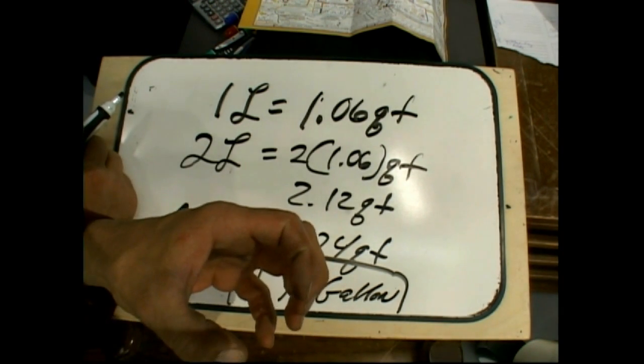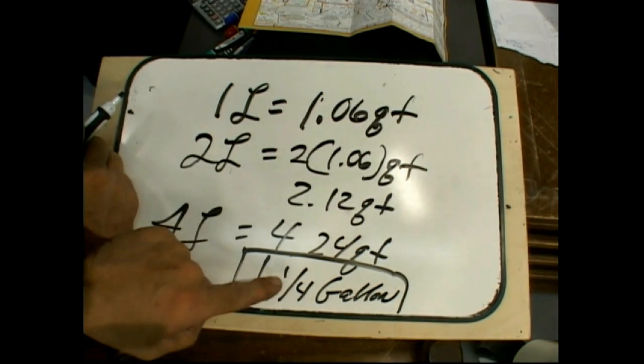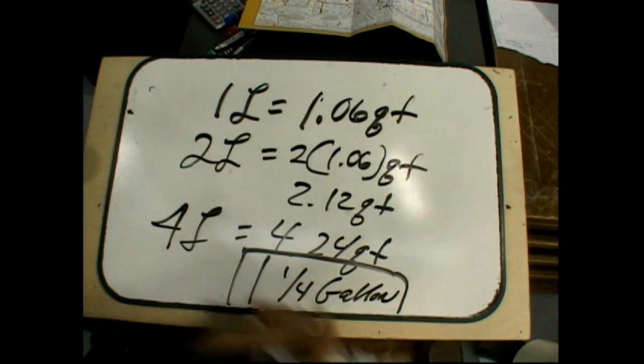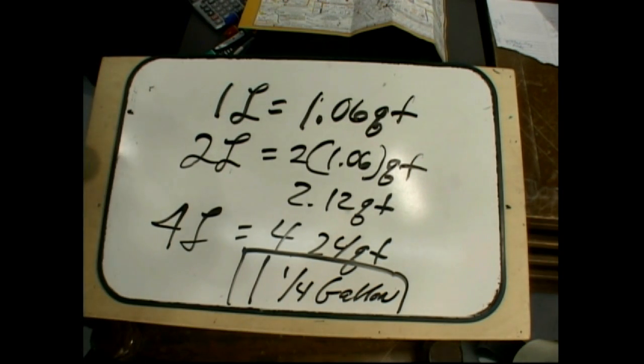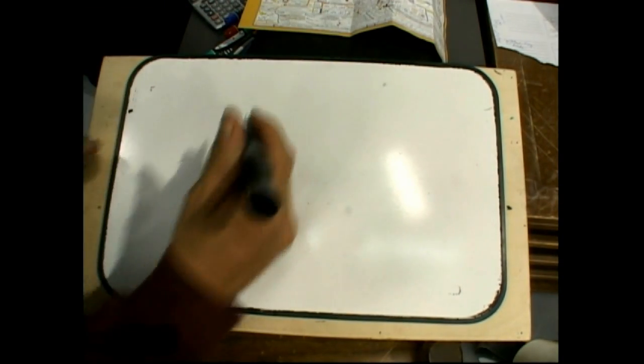Four liters equals one and a quarter of a gallon. So you picture four-liter bottles here. You pick one, two, you got a gallon container, it would spill over by a quarter of a gallon. What's a quarter of a gallon? Something you've got to do a conversion for.